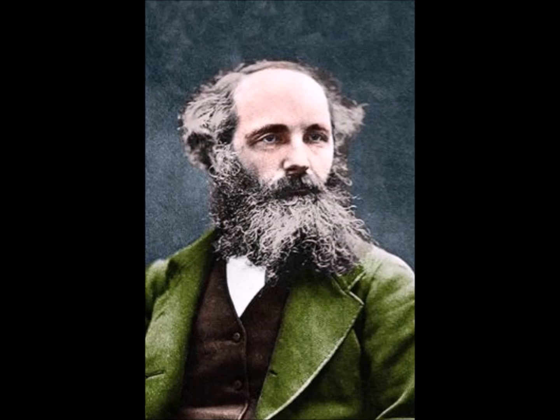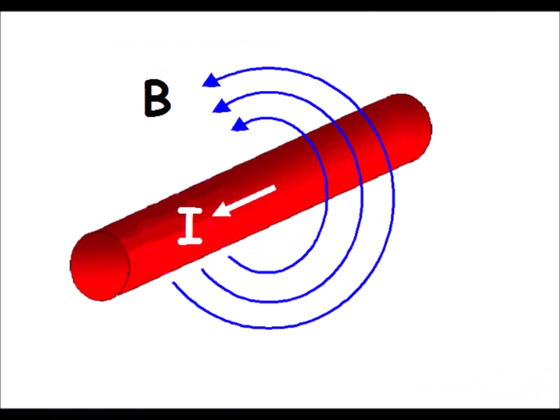Electric current results from the movement of free electrons in a conductor. The rotational magnetic field around the conductor is attributed to this movement of electrons. This displacement must necessarily be relative to the fixed atoms in the conductor. The speed of electrons in conductors is supposed today to be a few hundredths of a millimeter per second.